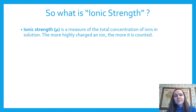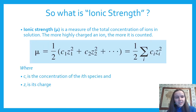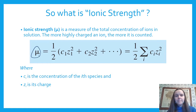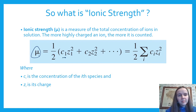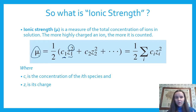Ionic strength is worth defining — it's a measure of the total amount of ions in solution, and the more highly charged an ion is, the more it's counted. The formula is: ionic strength μ equals one half of the sum of the concentration of each species times its charge squared. You add that up for all of the species, then divide by two.